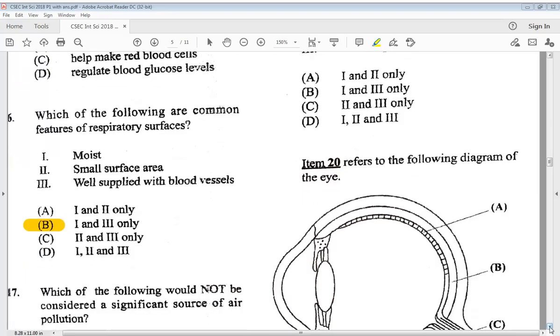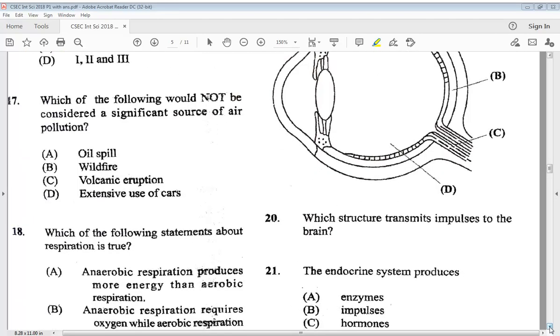Let's go to number 17. Which of the following would not be considered a significant source of air pollution? A, oil spill. B, wildfire. C, volcanic eruption. D, extensive use of cars. So we know it would be A, oil spill.